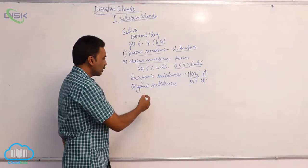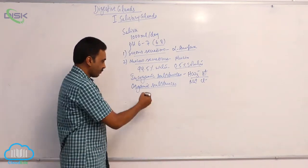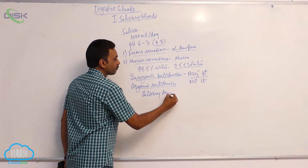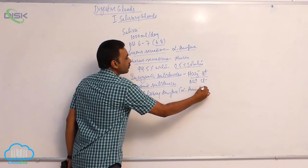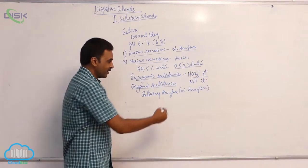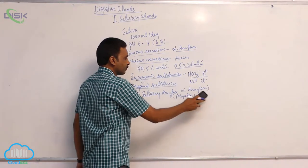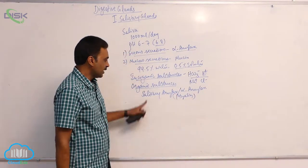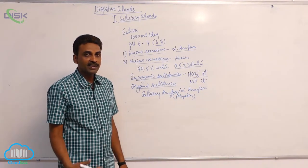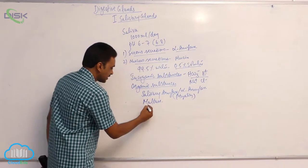The organic substances include various enzymes. The main enzyme is salivary amylase, also called alpha amylase — previously known as tylin, which is the old usage. It also includes maltase and salivary lipase.